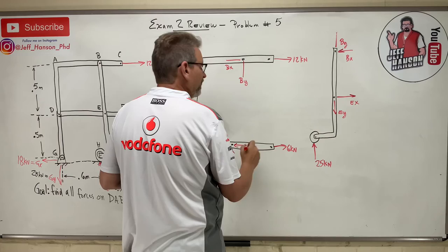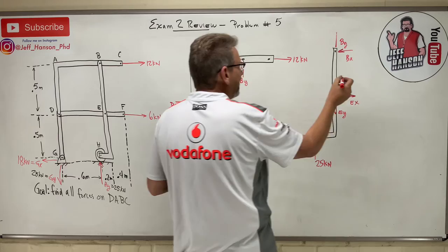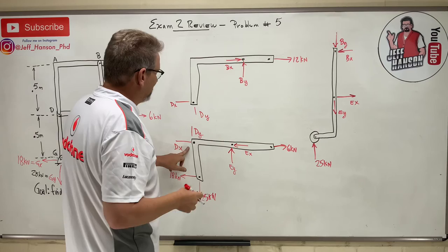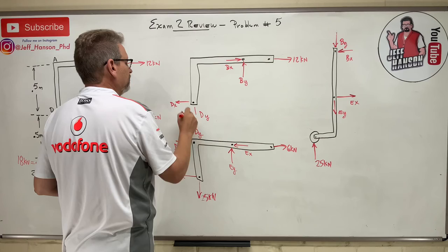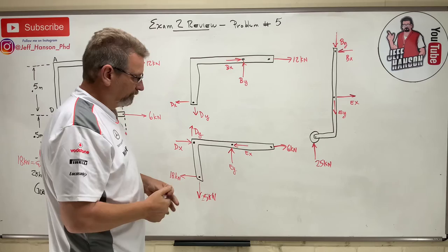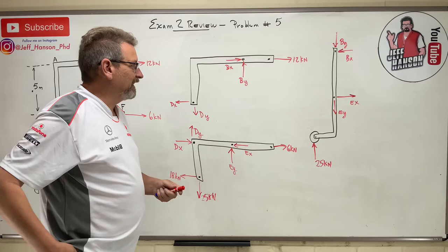So Ex goes this way, which means Bx has to go the opposite direction on the other piece. I'll guess By is downward — if I'm wrong I'll just get a negative, so it doesn't really matter. For Dx and Dy, I'll guess left and up, and then the reaction on the other piece has to be the opposite. We'll see how well we guessed. There are our free body diagrams — if you got the same thing, pat yourself on the back.